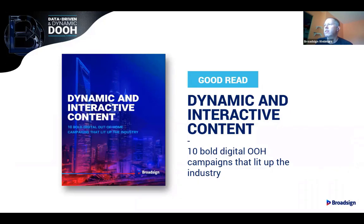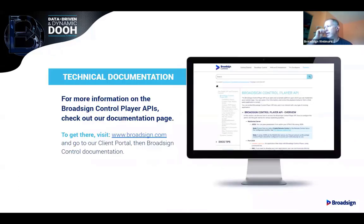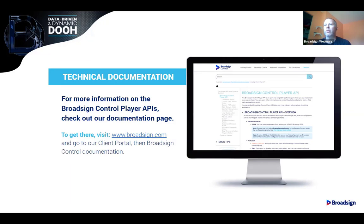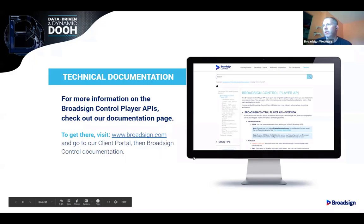We do have an e-book — Dynamic and Interactive Content — with 10 examples of some pretty good dynamic deployments, including the Virgin Rail one. It's a good, quick read available on broadsign.com. For anyone tasked with actually designing the content, the technical documentation is at broadsign.com, then the client portal, then BroadSign Control documentation — you'll find the player API with all the explanations there. It has examples in JSON and XML, and there's also a small application you can run locally if you're just testing. It's pretty well documented, so anyone that wants to get into using the player API, the documentation's great.